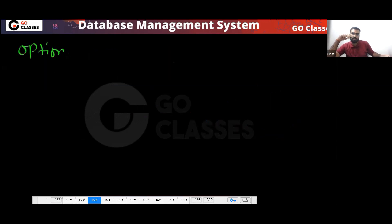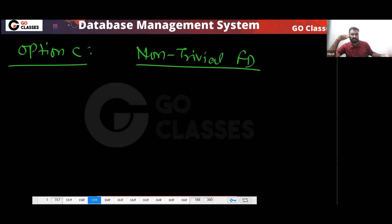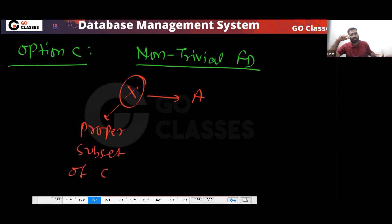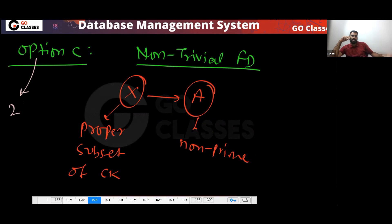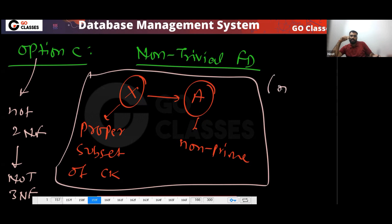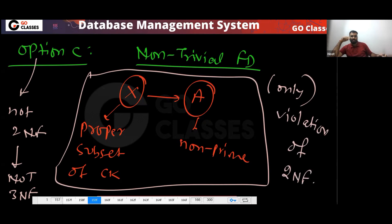What about option C? Option C says there is a non-trivial FD X determining A, where X is not a super key and X is a proper subset of a candidate key, and A is a non-prime attribute. This is a violation of 2NF — a proper subset of a candidate key determining a non-prime attribute. So option C implies not 2NF, and automatically not 3NF.